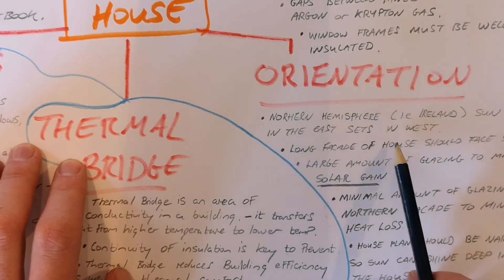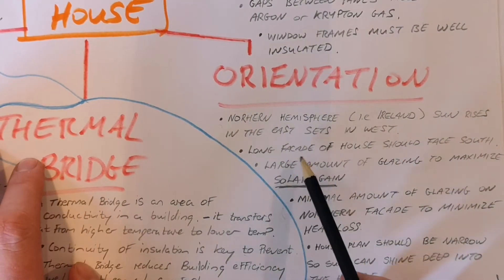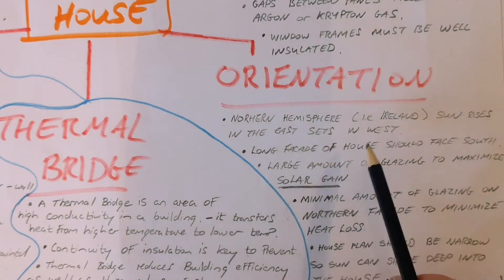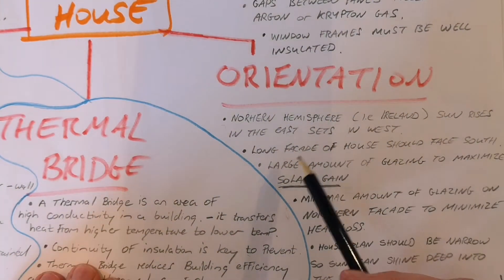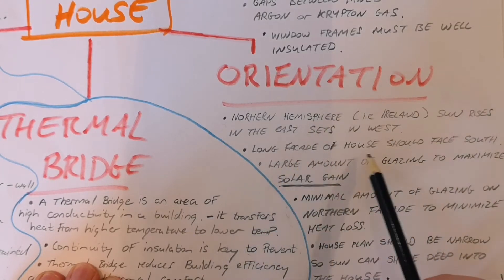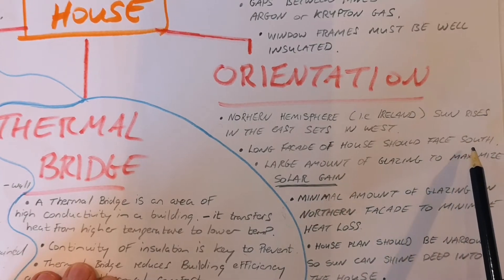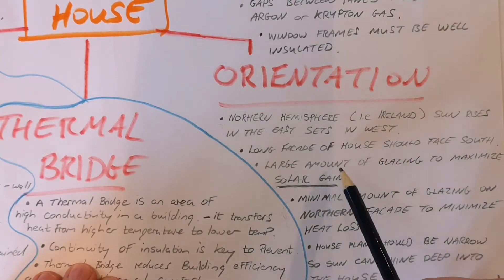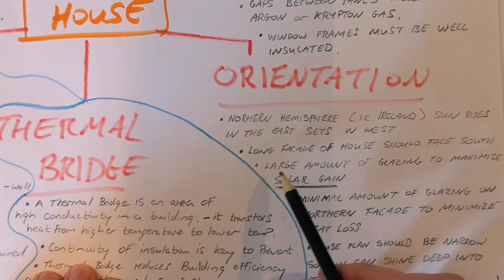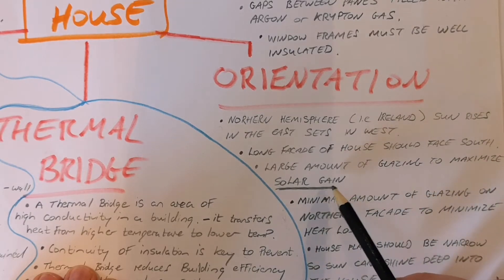In a passive house design, when the house is being planned and designed, the long facade — the longer part of the house — if you're looking at a rectangular shape, the long side of the house should be facing south, or very close to south. That's to maximize the amount of sunlight it's going to get throughout the day, with a large amount of glazing to maximize solar gain.